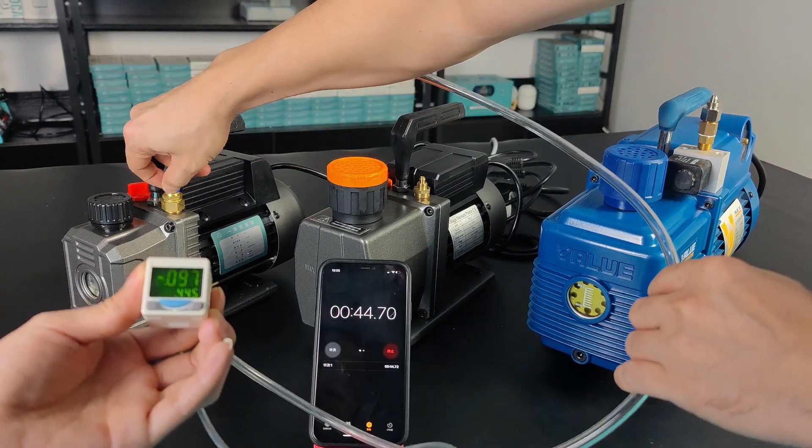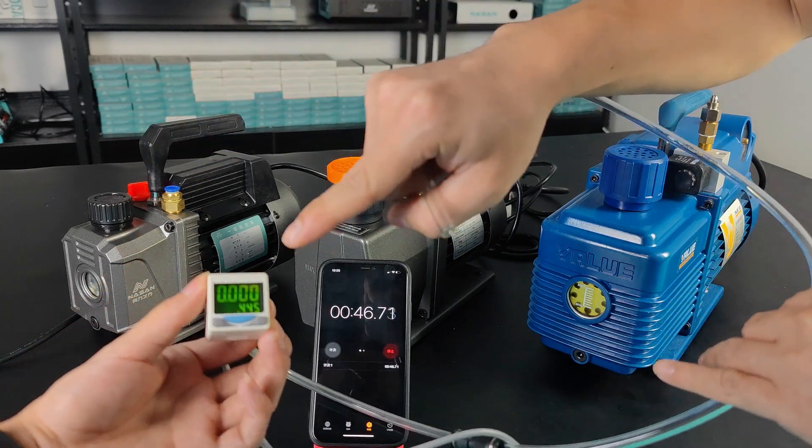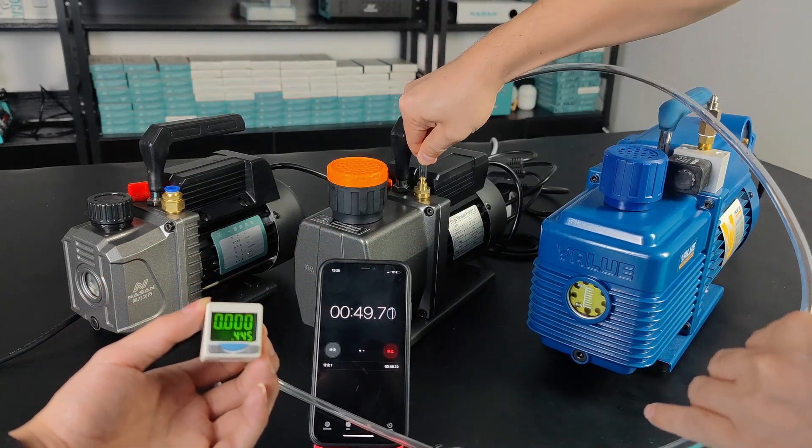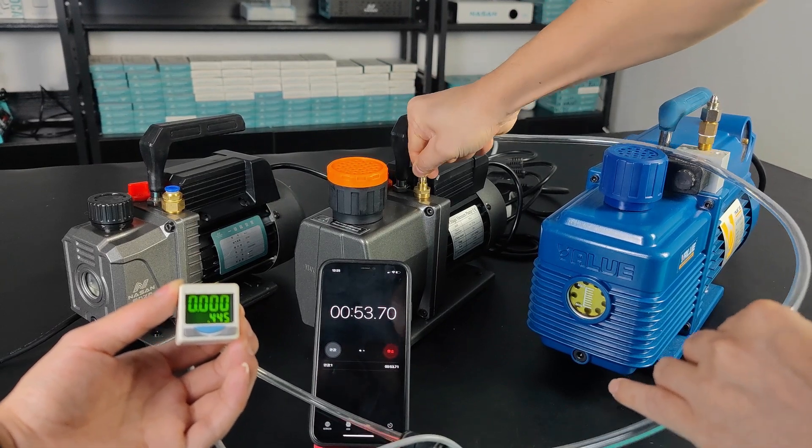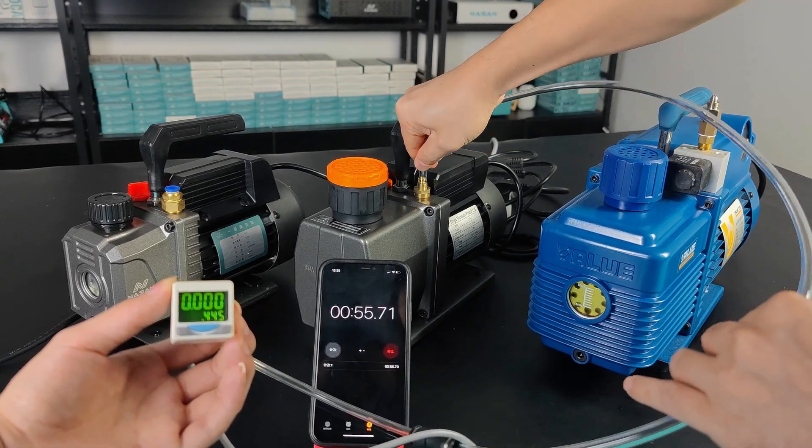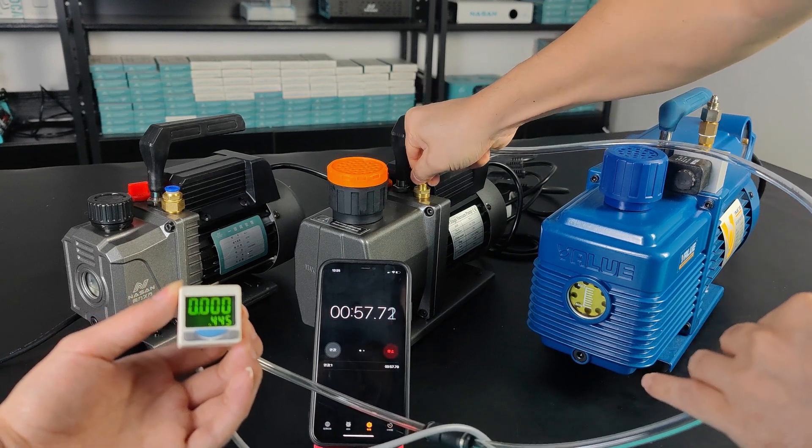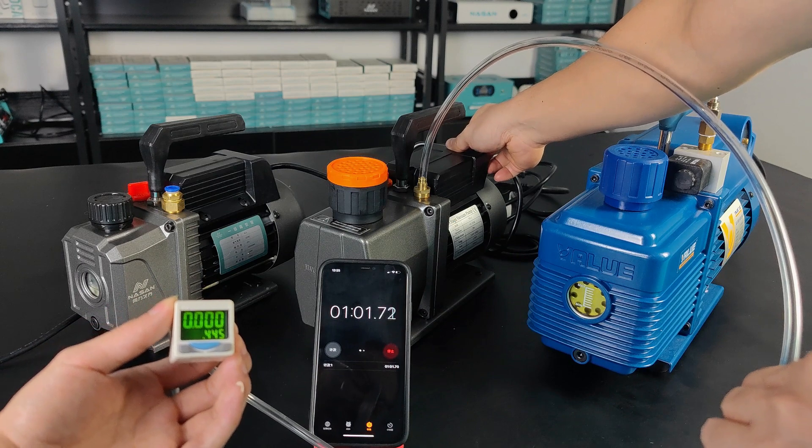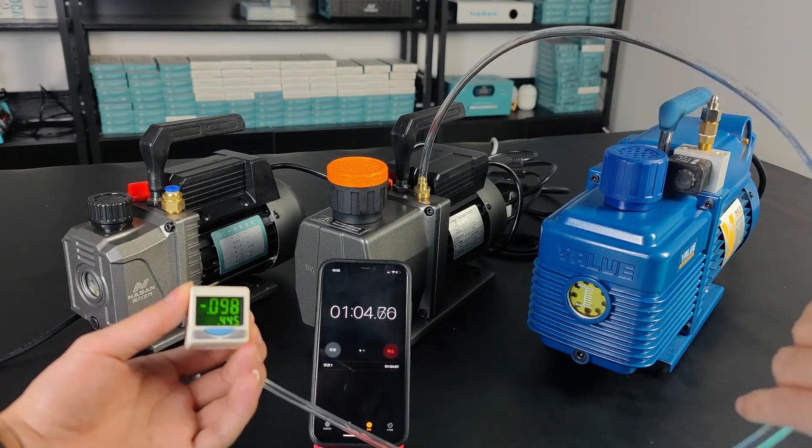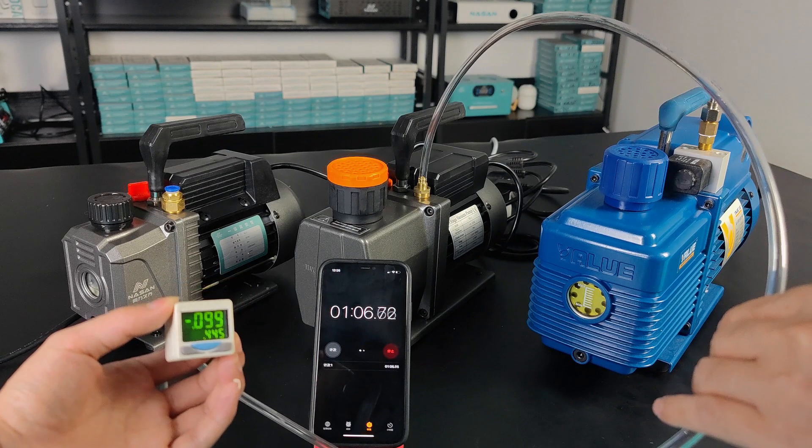Now we're going to test the two liter one and see if the data is the same or not. As I just said, the vacuum value is the most important point for lamination. If it's reaching this number, that means there's no air in the chamber. Otherwise, it has air bubbles easily. Now I start the two liter one.